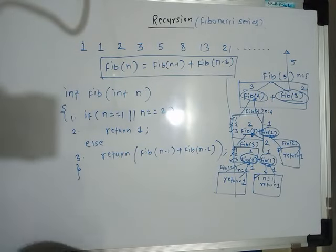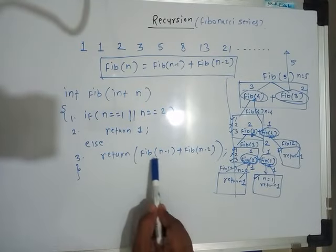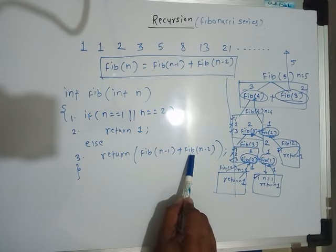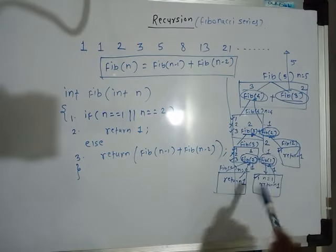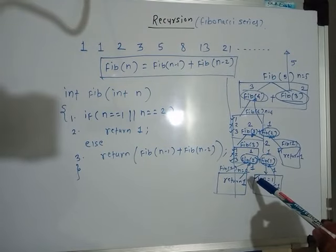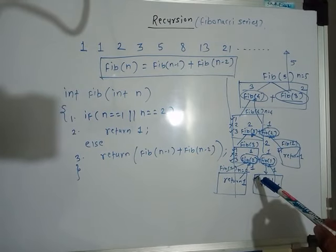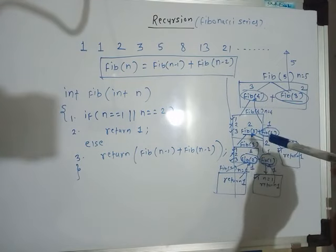That's the execution of this Fibonacci function, which is recursive in nature. The function calls itself twice — that's why it's a recursive function, and this structure is called a recursion tree. The recursion expands and when n reaches 1 or 2, that's the terminating point, and we start winding up the recursion to get the answer to the original problem. Thank you for watching.